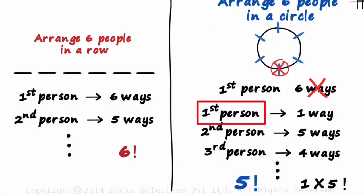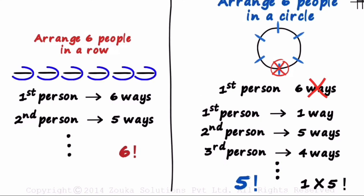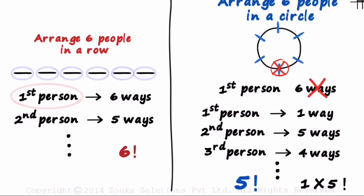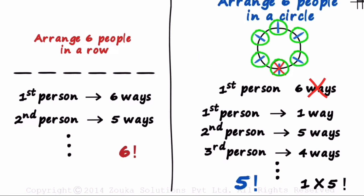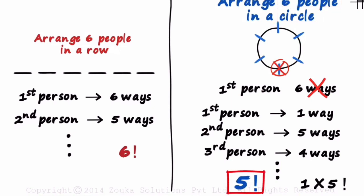This was the logic behind subtracting one from n. The first person can be seated in just one way. In a row, each slot is different from the others for the first person, but in a circle, each chair or position is the same for the first person. So remember: n people can be seated in a circular fashion in n minus one factorial ways. Memorizing this is not a good idea — understanding the concept is better.